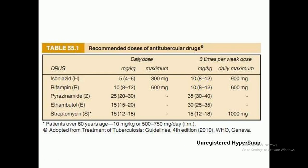Rifampicine, represented by R, is given at 8 to 12 mg/kg body weight with a maximum dose of 600 mg. Pyrazinamide, represented by Z, has a maximum dose of 600 mg and is given at 20 to 30 mg/kg daily, or 30 to 40 mg/kg three times per week, with a maximum of 600 mg.